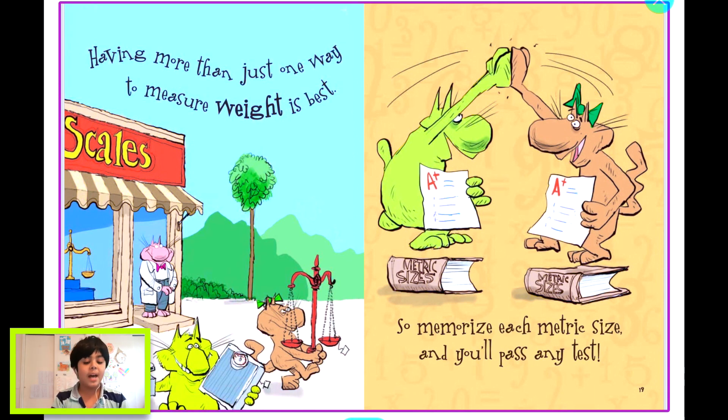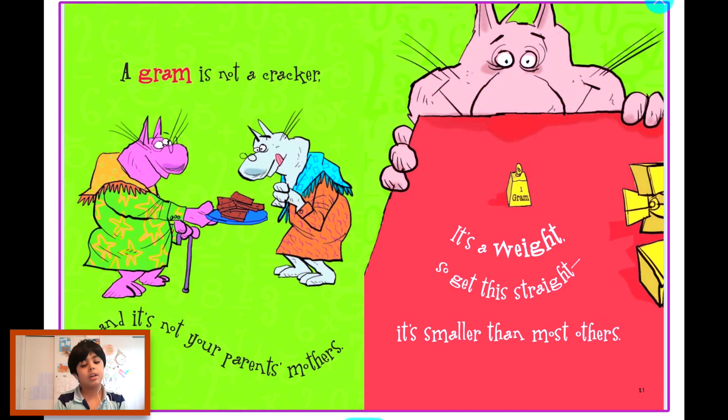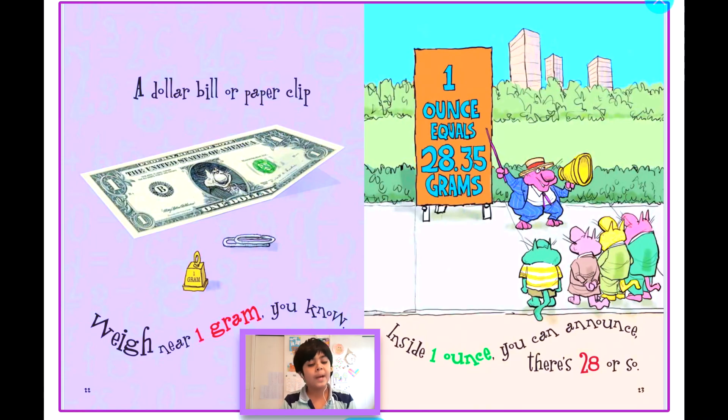Having more than just one way to measure your weight is best, so memorize each metric size and you'll pass any test. A gram is not a cracker and it's not your parents' mothers—it's a weight, so get this straight, it's smaller than most others. A dollar bill or paper clip weighs near one gram, you know. Inside one ounce you can announce there's 28 or so.